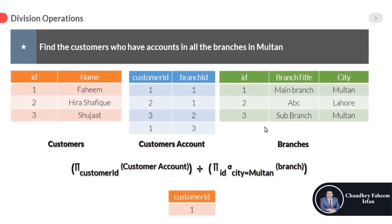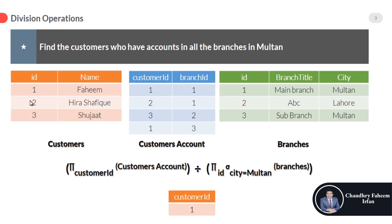Here is the first example: find the customers who have accounts in all the branches in Multan, where Multan is the city name. We have three tables. The first one is customers: id 1 belongs to Fahim, id 2 belongs to Hira Shafiq, and id 3 belongs to Sujat. In the customer accounts table, customer id 1 and branch id 1 means that Fahim has an account in branch id 1, which is the main branch in Multan. The branches table contains all the branches.